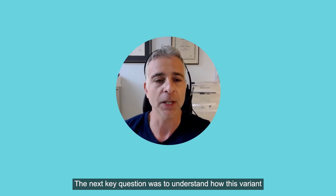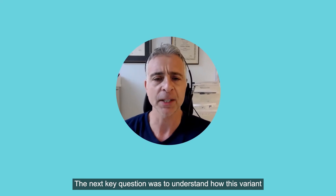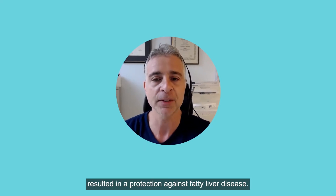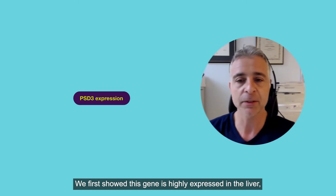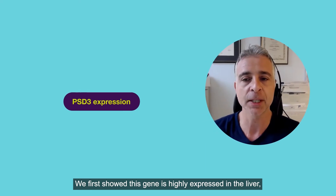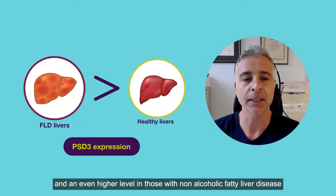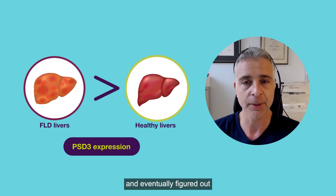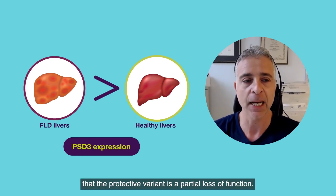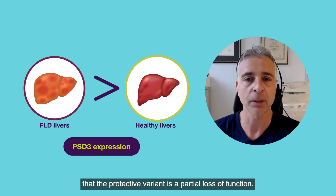The next key question was to understand how this variant resulted in protection against fatty liver disease — in other words, understanding the molecular genetics. We first showed this gene is highly expressed in the liver and at an even higher level in those with non-alcoholic fatty liver disease, and eventually figured out that the protective variant is a partial loss of function.